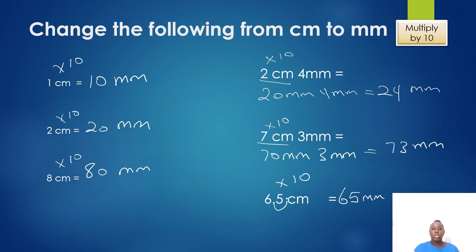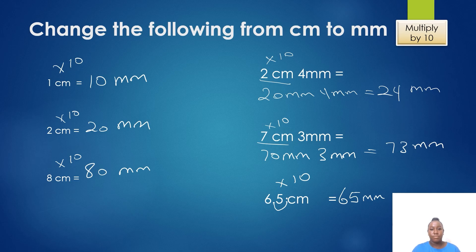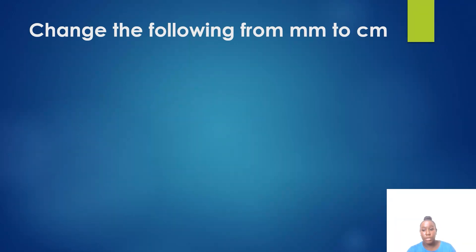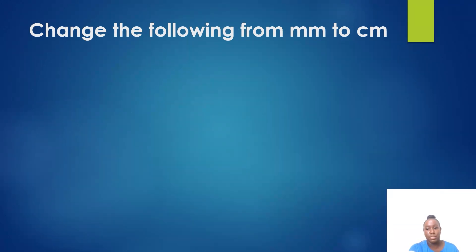So this was changing centimeters to millimeters. Now we're going to be changing from millimeters to centimeters. When we are changing from a small unit to a big unit we have to divide, so we would be dividing by 10.